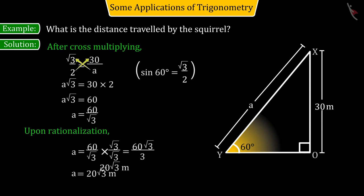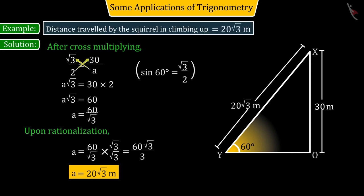we get the value of A as 20 square root 3. So, we can say that the distance covered by the squirrel in climbing up will be 20 square root 3 meters.